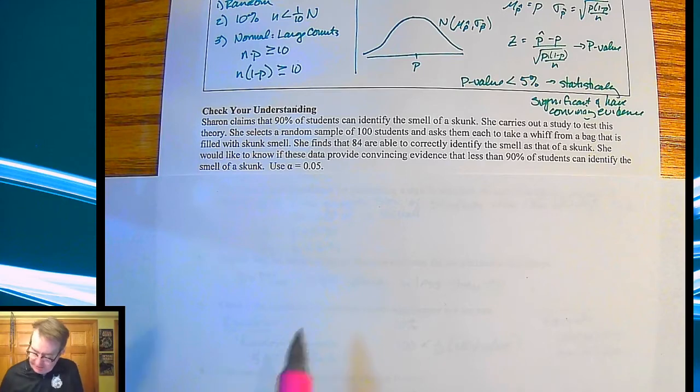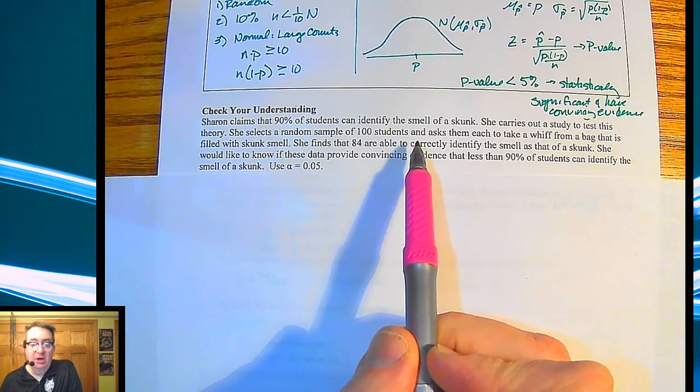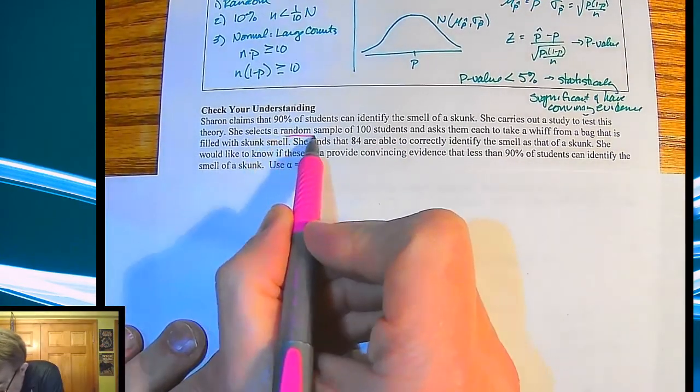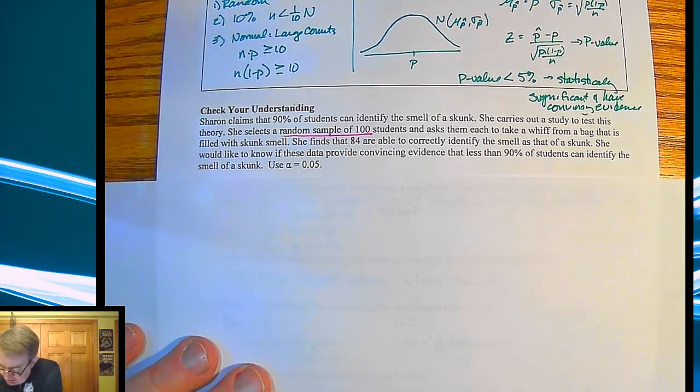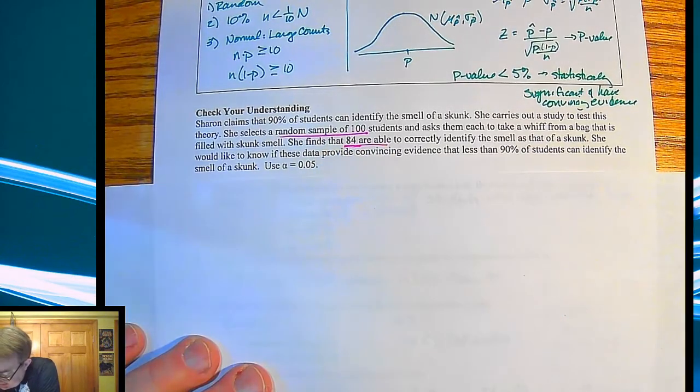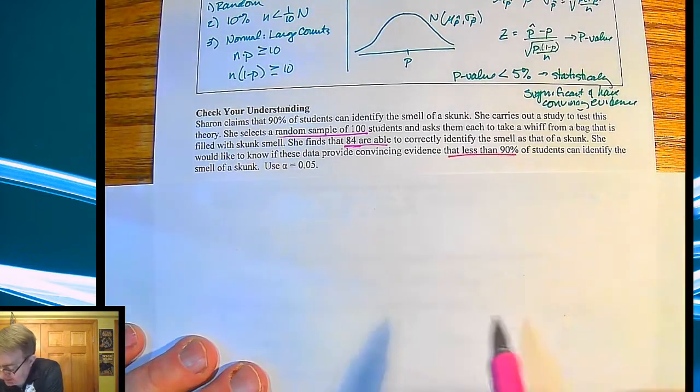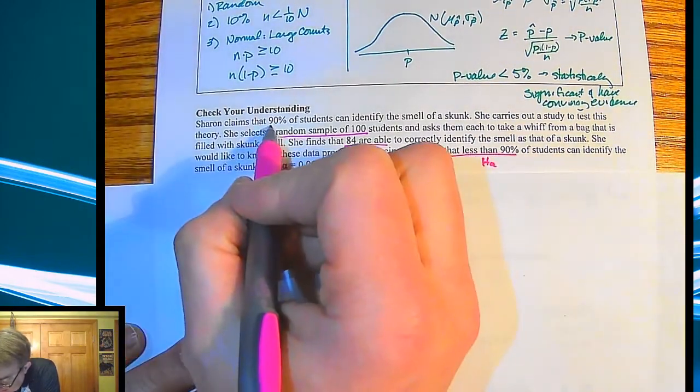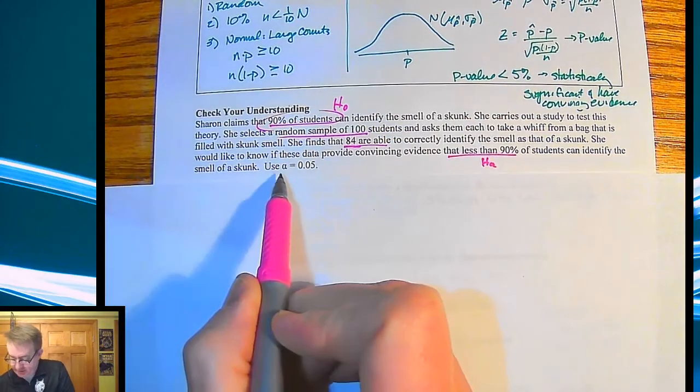They're saying 90% of students can identify the smell of a skunk. So they do a test. They random sample, ooh that looks important, of 100 students. Ask them to take a whiff from a bag filled with a skunk smell. 85, 84 able to correctly identify the smell of a skunk. She would like to know if this is convincing evidence that less than 90%. So this is basically our HA here. And then this up here is going to be H sub O. And again, they're telling us what our alpha value is.